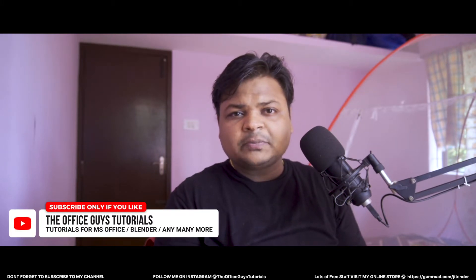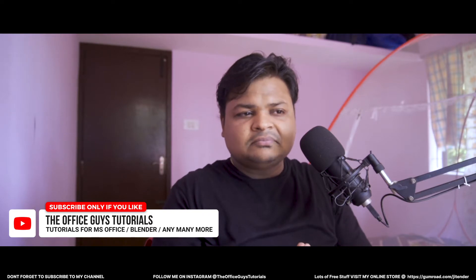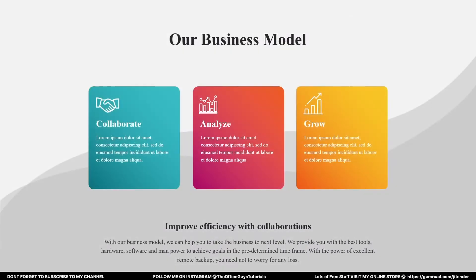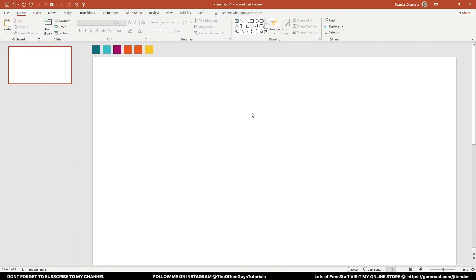The next thing is color scheme. Whenever we are designing anything, the colors should not be too harsh — like dark red or black. They should be very gentle in nature. That's why I have taken some shades of blue, pink, orange, and yellow, because these are light in nature. So let's just start doing this.